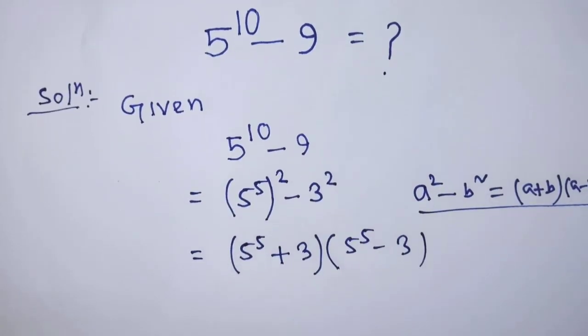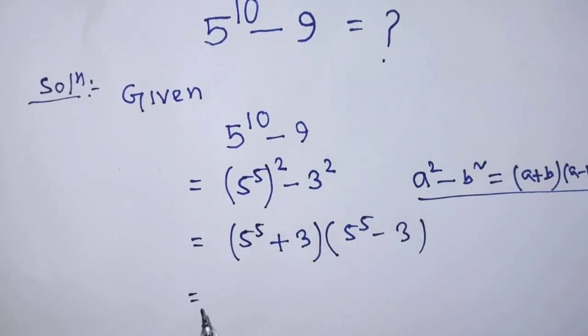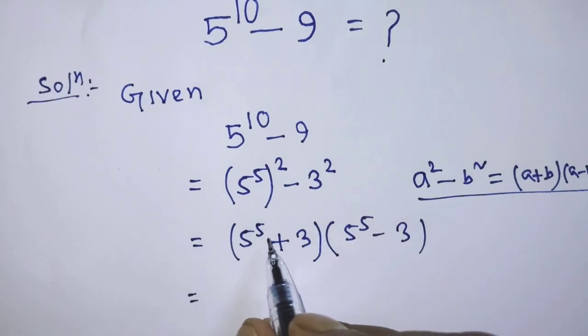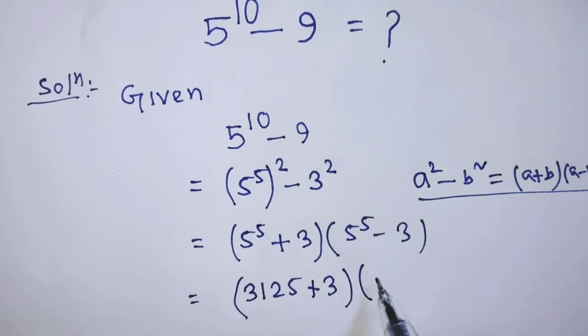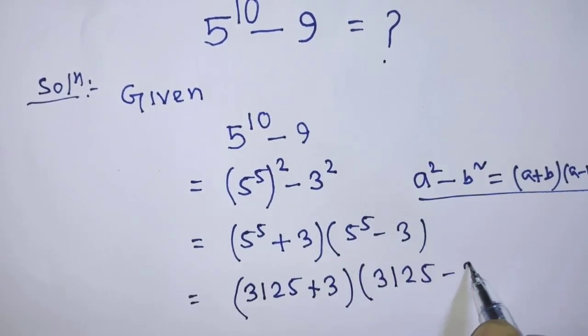After that, it will be 5 to the power 5, that is 3125, plus 3 times 3125 minus 3.